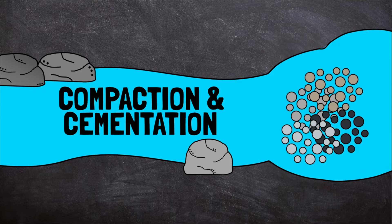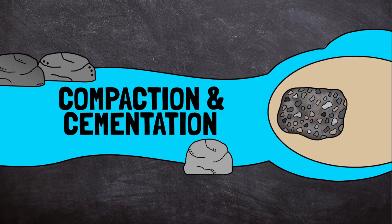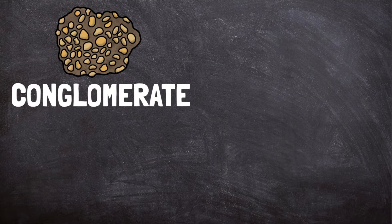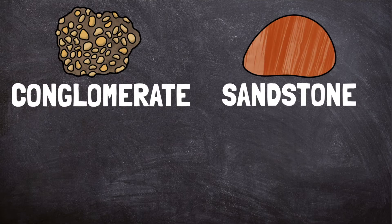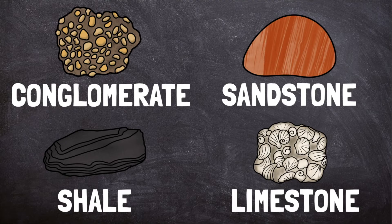This is called cementation. Together, compaction and cementation press and glue sediment together to form sedimentary rock. There are different types of sedimentary rocks. Conglomerate has larger pieces of sediment, like small rocks cemented together. Sandstone is made of grains of sand pressed and cemented together. The sediment that makes up mudstone and shale is even smaller and finer than sandstone. Limestone forms from the shells of sea creatures instead of rock sediment.